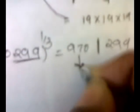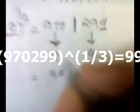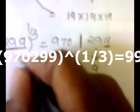From table number one, 970 lies between 729 and 1000, so it lies between 9 and 10. We take the minimum, which is 9. For the right-hand side, the units digit is 9. From table number two, units digit 9 corresponds to 9. So our answer is 99. If you multiply 99 by 99 by 99 you will get 970,299.